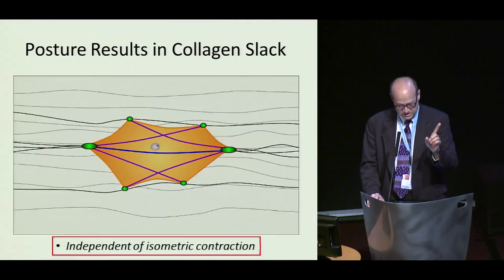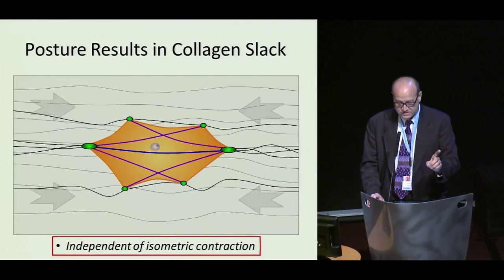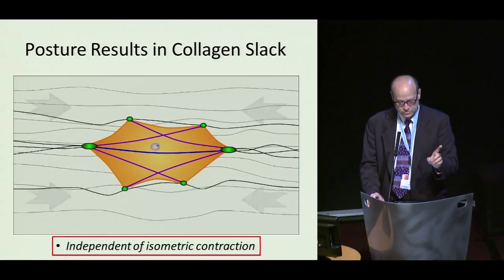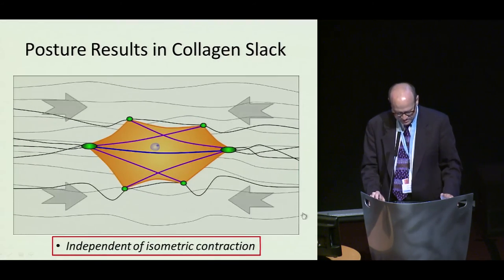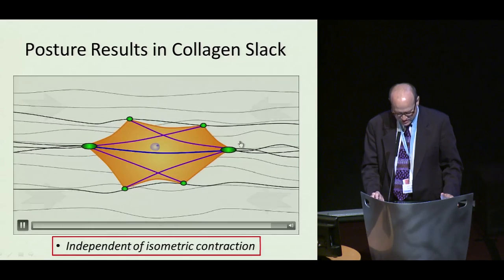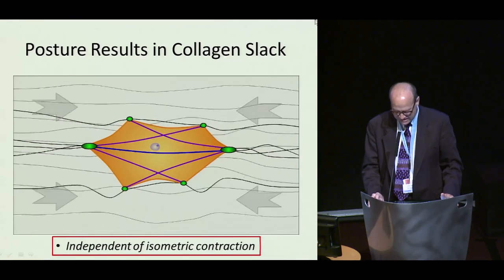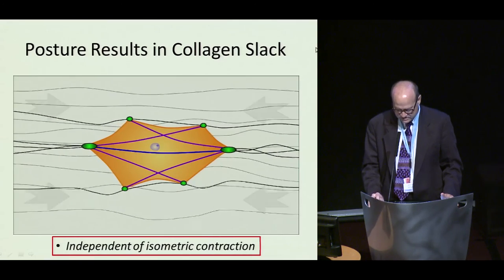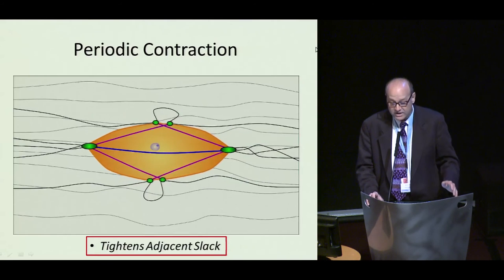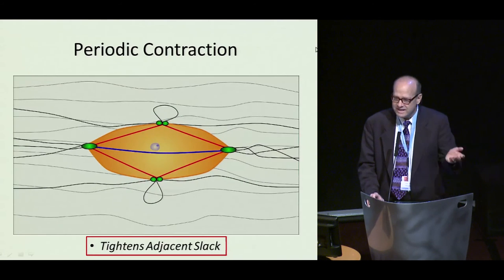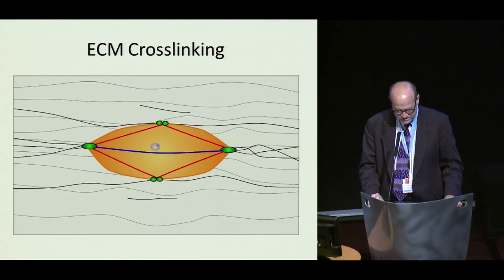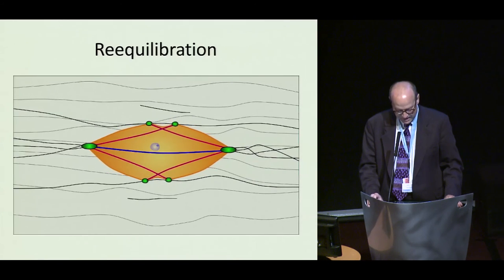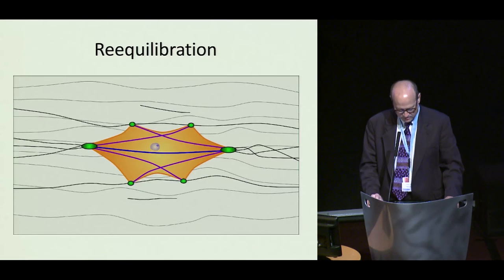The passive contraction model is different. The first step is matrix laxity: the hand rests in laxity, and extracellular collagen strands become lax. When they're lax, periodic contraction kicks in — because it's always going on — and trims out the slack with extracellular cross-linking enzymes, then reequilibrates. And there you have it.